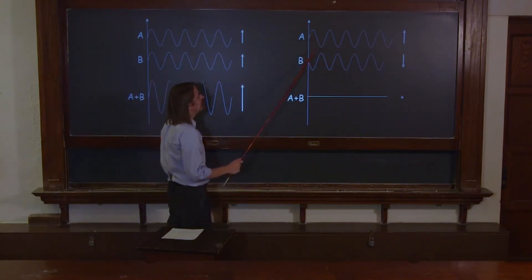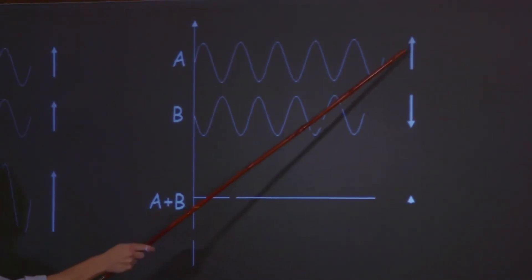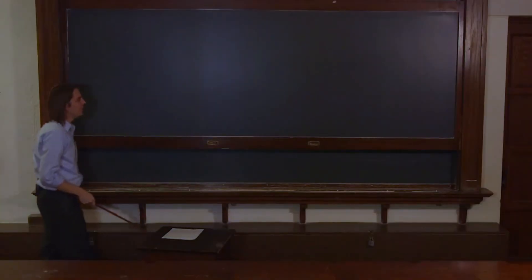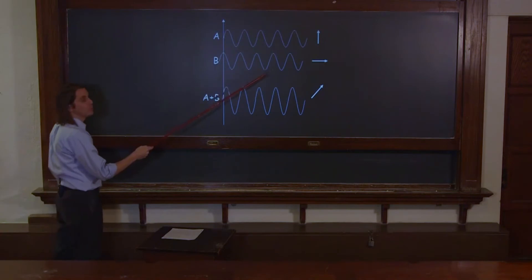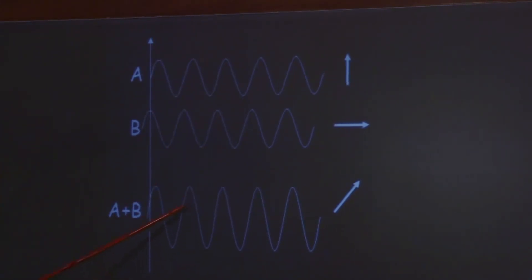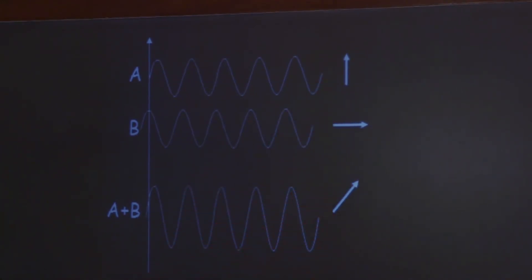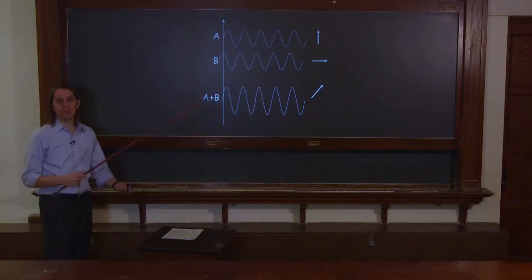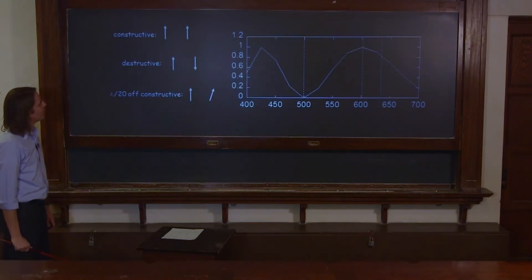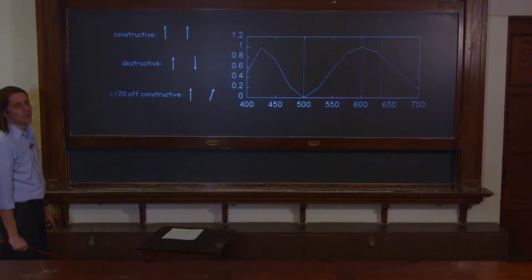If you have a sine and then a sine with a negative one — so pi out of phase — those add and give you destructive interference, nothing. A pi phase difference means one phasor points up and the other points down; add them as vectors and you get nothing. Here are two sinusoids pi over two out of phase — whenever you add two sinusoids with any phase difference you still get a sinusoid. You can figure it out by adding the two phasors as vectors, giving the new amplitude and phase of the resulting sinusoid.